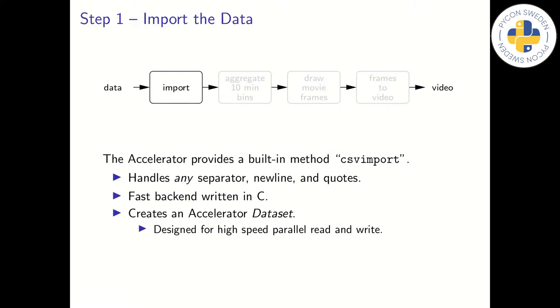The first step is to transform the input data into a more efficient format. For this, we use a built-in function called CSV import that reads data stored in a tabular format. This function provides a lot of flexibility when it comes to new lines, column separators and quotes. The function creates what is called an accelerated dataset that is stored on disk. This is a powerful storage format designed for fast parallel reading and writing of large amounts of data. And we will talk more about it later.